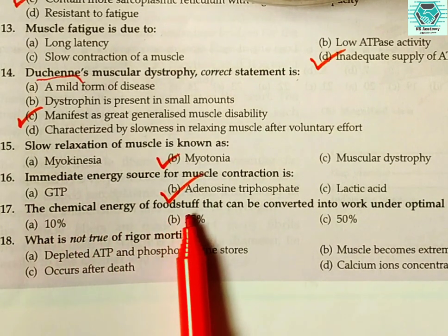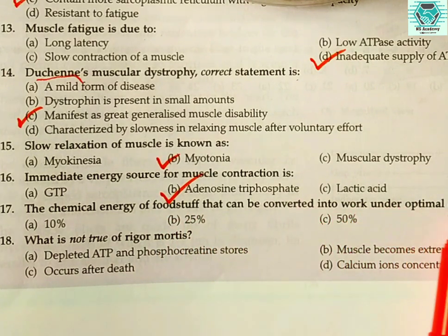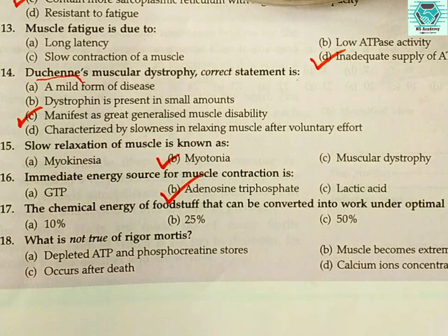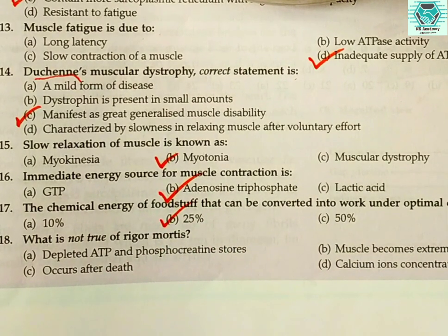Number seventeen: the chemical energy of foodstuffs that can be converted into work under optimal conditions is — (a) 10%, (b) 25%, (c) 50%, or (d) 75%? The answer is (b), 25%. So 25% of the chemical energy of foodstuffs can be converted into work under optimal conditions.